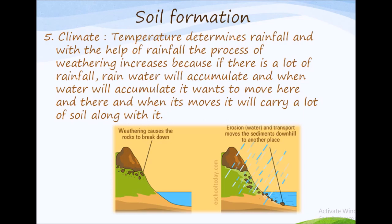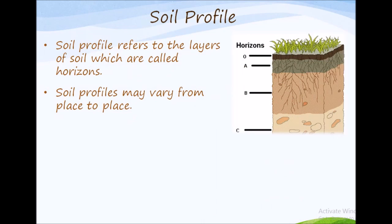So this was all about the factors that affect soil formation. Now let us move to soil profile. Soil profile refers to layers of soil which are called horizons. For example, if we dig a one-meter deep pit in the ground, we can see the different layers or horizons of soil. Soil profile may vary from place to place.